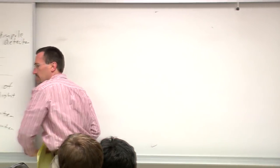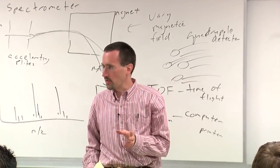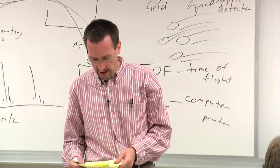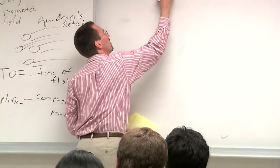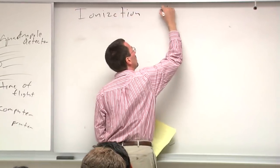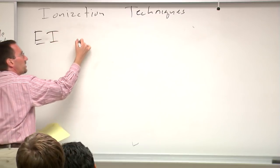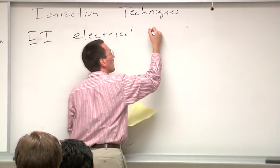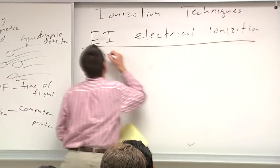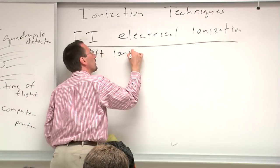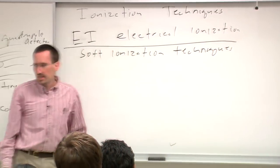One of the problems with EI mass spec is that you put a lot of energy into the molecules, so they often fragment — you're often not seeing the molecular ion directly, but inferring it from fragments. There are a whole bunch of other ionization techniques, and these are important because often you get less fragmentation. In addition to EI, there are techniques called soft ionization techniques that are less prone to fragmentation.